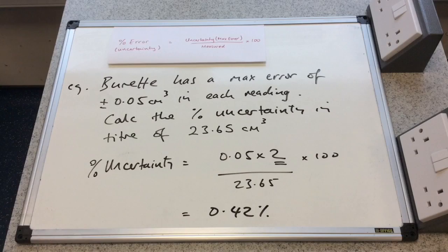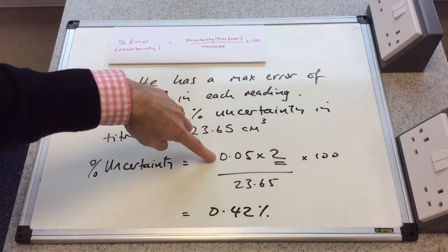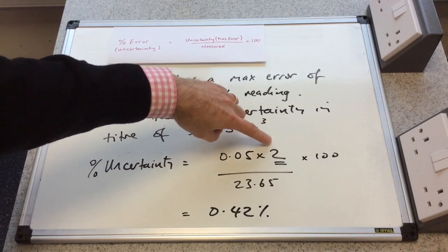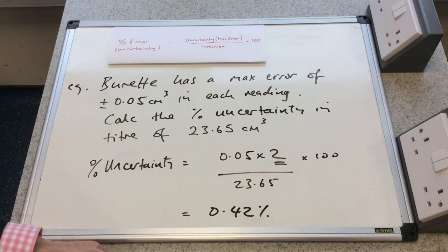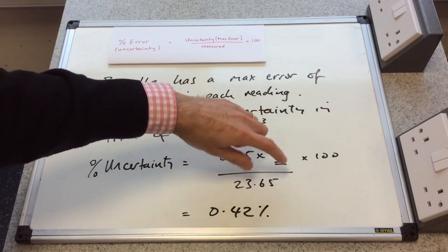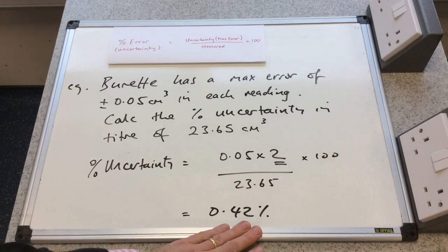And there's my answer. So I've just put the numbers into this formula here. There's the maximum uncertainty in the burette. I've doubled it because the titrant has been arrived at from two measurements. So the uncertainty divided by the amount measured multiplied by 100 gives me 0.42% error.